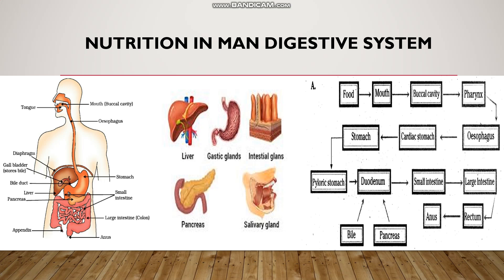Mouth leads into the buccal cavity and this buccal cavity then opens into the pharynx. Pharynx then leads into the esophagus or the food pipe and it reaches the stomach. The stomach is located on the left side of the body and is J-shaped.